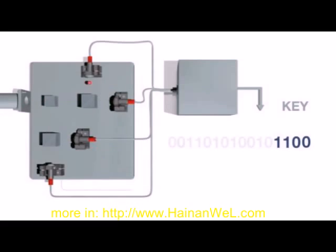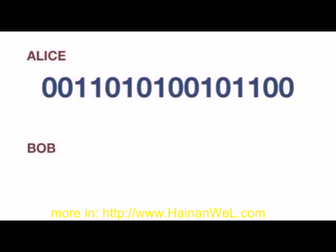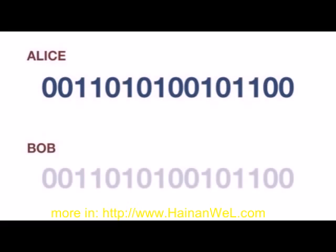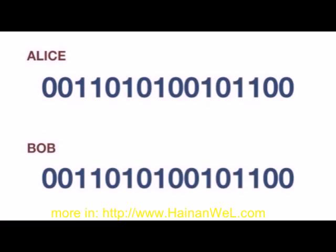The string of zeros and ones that the computer has generated is Alice's key. Bob, having made similar measurements on his photons, will obtain the same sequence of bits. They therefore share an identical key.